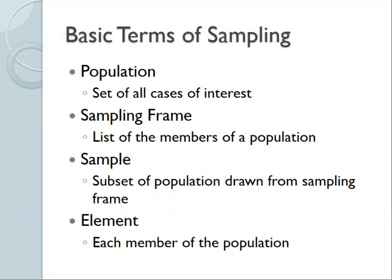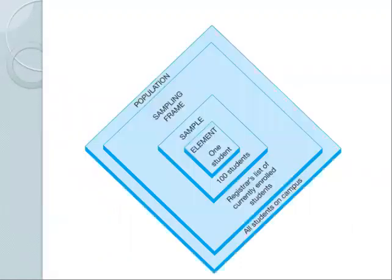The element is each individual member of the population. It's important to remember that populations — not samples — are really what we're interested in. Our samples are only as good as they are representative of the population. For example, our population might be all students on campus, our sampling frame might be the registrar's list of currently enrolled students, we might take a sample of 100 students, and each individual student who participates is an element.